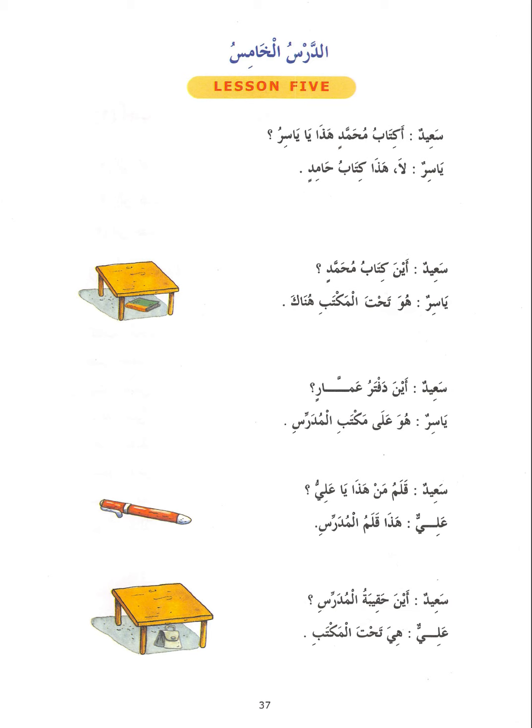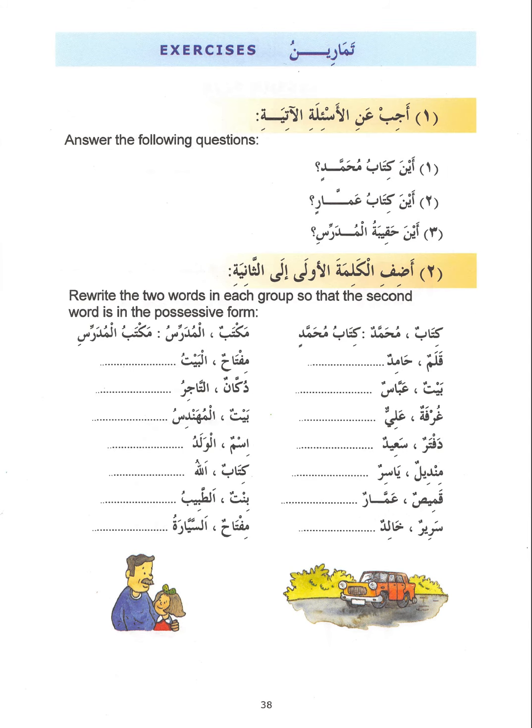Now there are some exercises. For example, Ayna Kitabu Muhammadin? — the answer is Huwa ala al-maktabi. Kitabu Muhammadin: Kitabu is the mudhaaf, Muhammadin is the mudhaafun ilayh. In exercise two, you are asked to rewrite pairs of words so that the second word is in the possessive form — for example: Miftaahu al-bayti, Qalamun Muhammadin, Baytu Abbasin, Ghurfatu Ariyin, Daftaru Sa'eedin, Manzilu Yasirim, Qamisu Ammalin, Sariru Khalidin, Miftaahu al-sayyarati, Bintu al-tabibi.